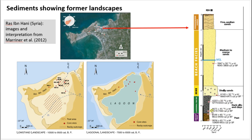The peat was later covered by fine silts and clays, probably from a lagoon, and then covered over by various types of sand. This allows scientists to reconstruct how the landscape changed from a former land area with lower sea level, gradually turning into a lagoon as sea level started to rise, and finally turning into the modern peninsula we see today. These are just some examples of how geological and geoarchaeological evidence can contribute to our understanding of the archaeological record.